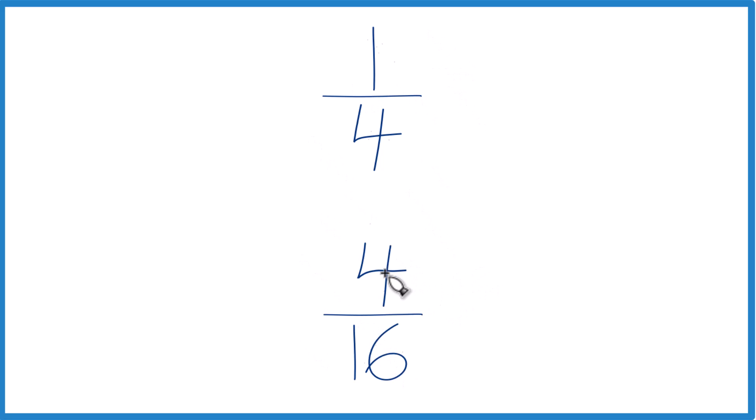So 4 goes into itself and 16 evenly. I'm going to divide 4 by 4 and end up with 1. And 16 divided by 4 is 4.